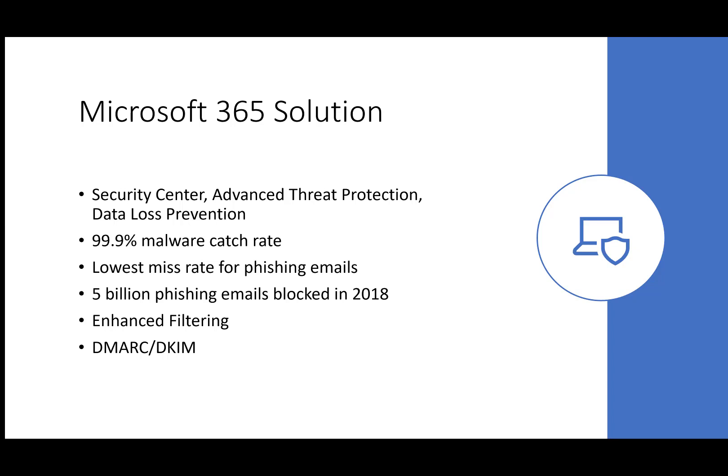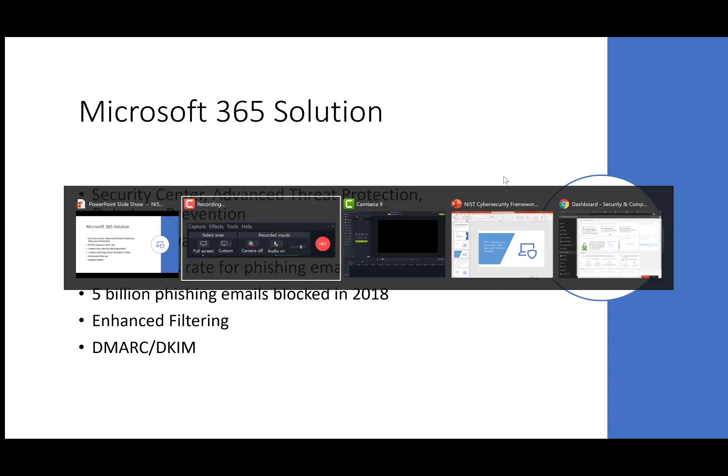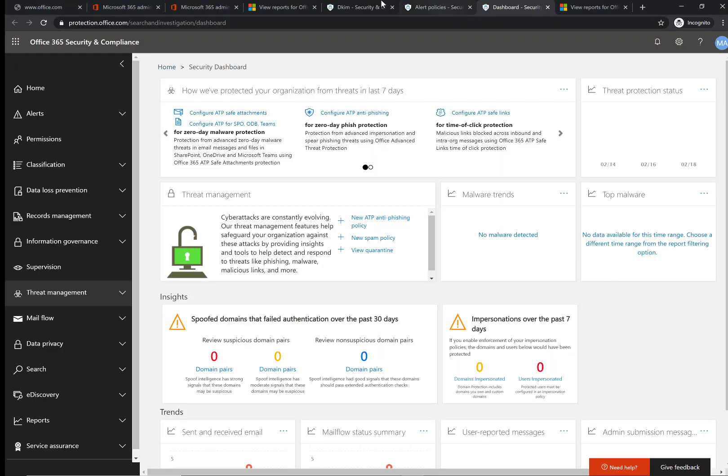Secondly, with Advanced Threat Protection there are machine learning capabilities that track where a user typically gets and sends email, allowing it to better protect against threats when it has the original IP address versus just what's being relayed from Barracuda, for instance. And lastly, you have DKIM and DMARC that you can configure within that portal as well.